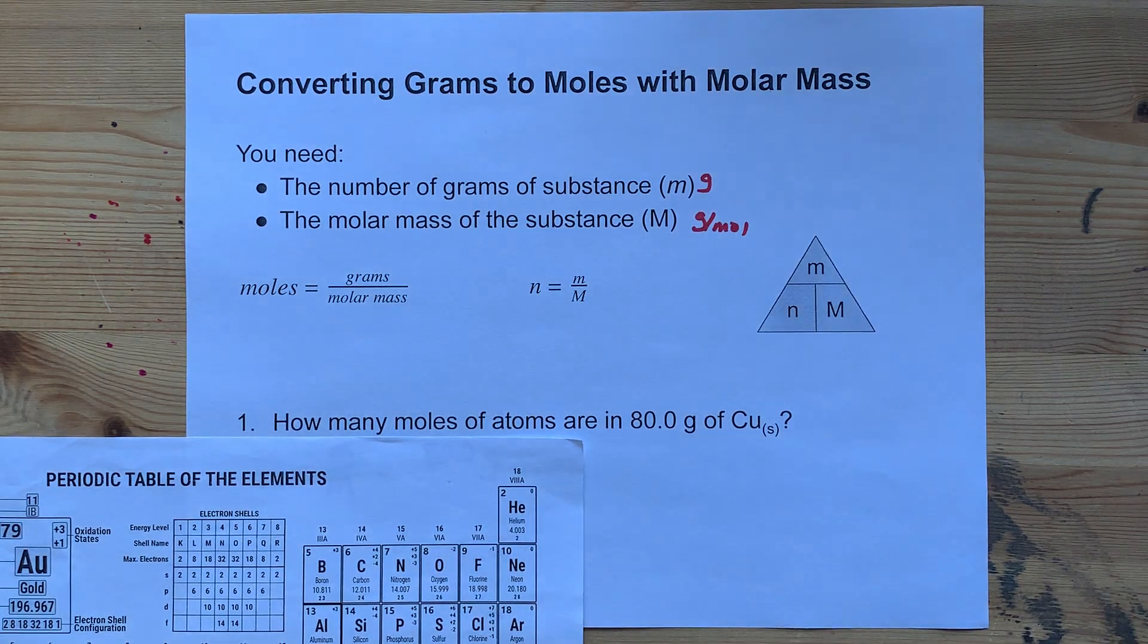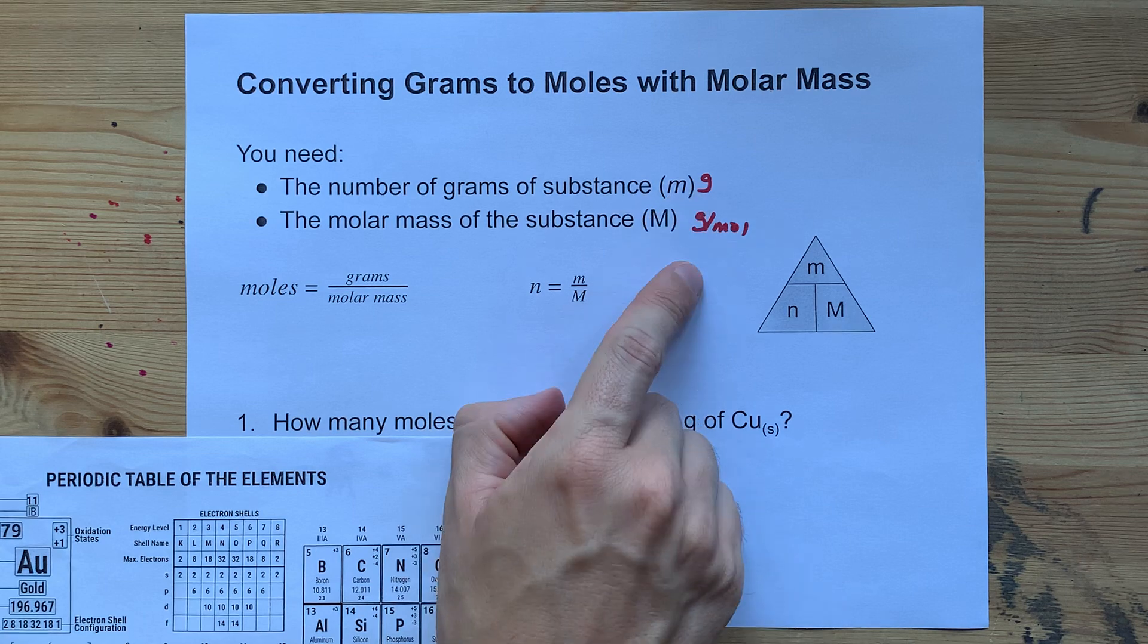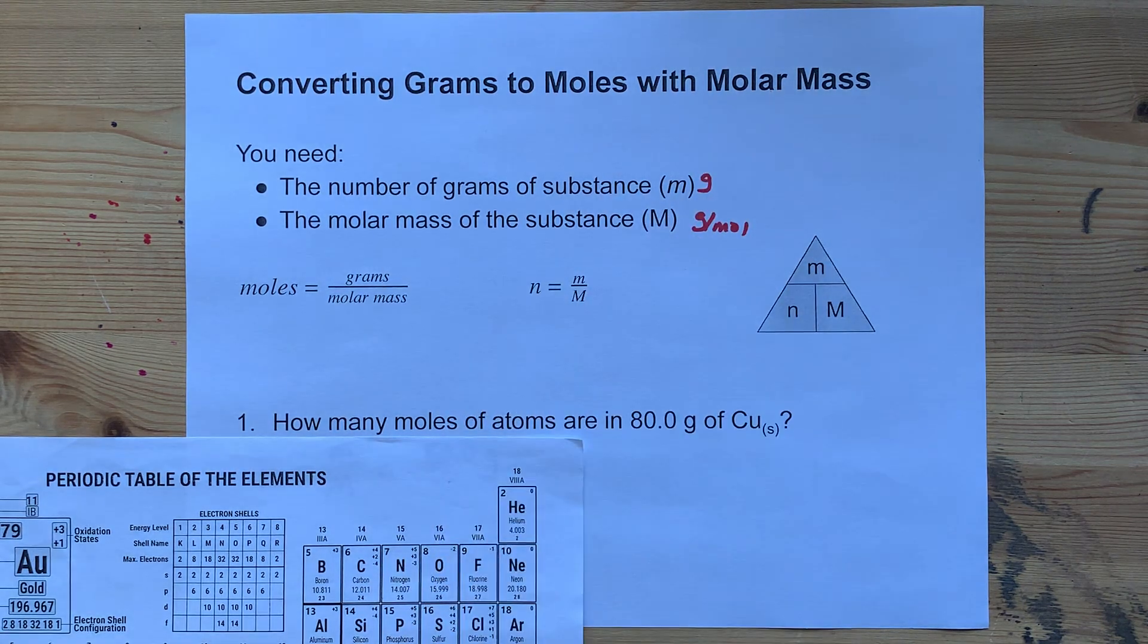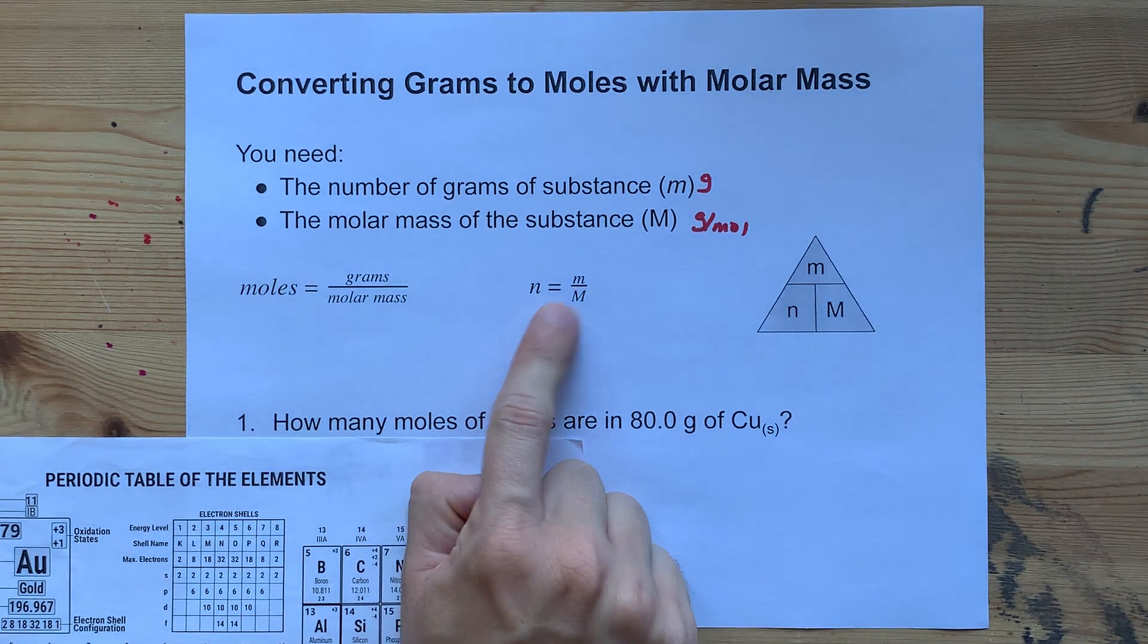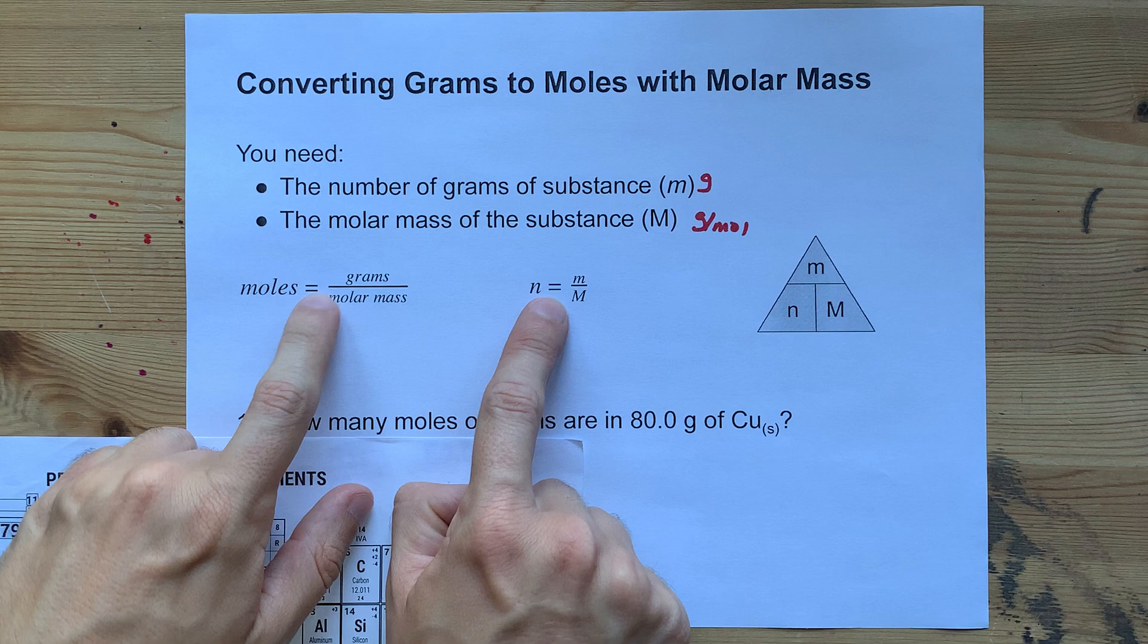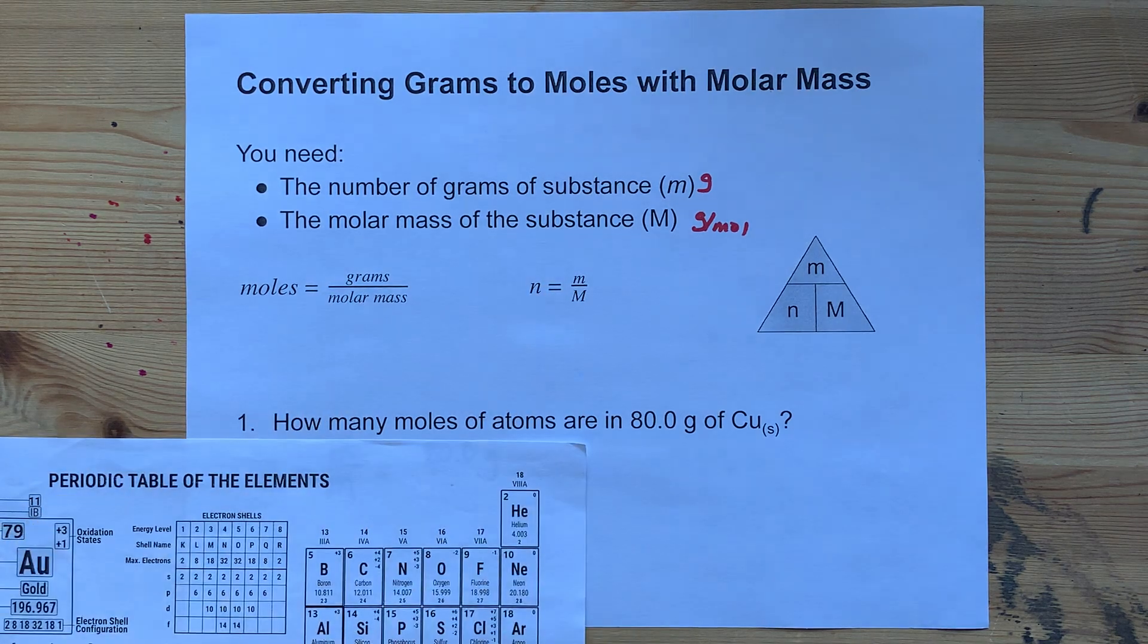How do you convert from grams to moles? The short answer is you take grams and divide it by the molar mass, which is in grams per mole from the periodic table. Your teacher is probably giving you this formula. You just have to remember that it's moles equals grams over molar mass.